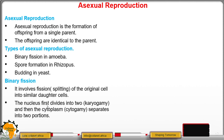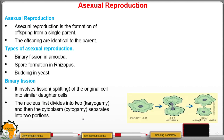The nucleus first divides into two. The division of the nucleus is called karyogamy, followed by cytoplasmic division known as cytogamy. So the parent cell begins with karyogamy — the nucleus divides into two — followed by cytoplasmic division, or cytogamy.